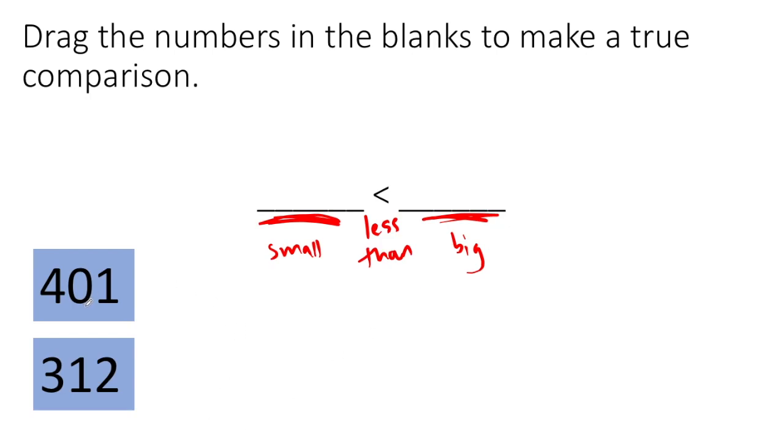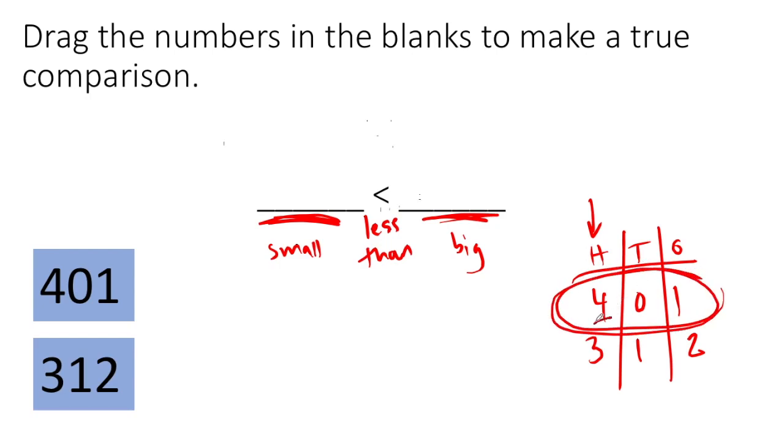So now I do the same exact work I did before. I draw my place value chart, put the numbers on the chart, and look in the biggest place first. This number has more hundreds. So it's bigger. So this is my small number. Now I can drag it over. 312 is less than 401.